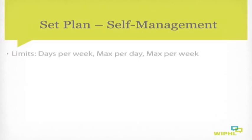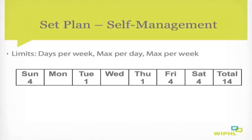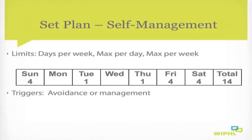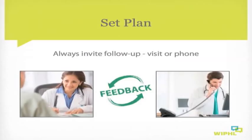When delivering brief interventions, it can be helpful to assist patients in setting limits using a weekly calendar — deciding how many days a week they'll drink, the maximum drinks per day, and the maximum per week. For example, a patient might limit drinking to no more than four drinks on Friday, Saturday, and Sunday, and no more than one drink on Tuesday and Thursday, keeping to the limit of 14 drinks for healthier and safer drinking. We can also help patients identify triggers and environmental factors they may need to avoid or manage.